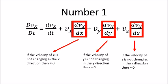Alright, here comes the tricky part. If velocity of x is not changing in the x direction, then dvx dx equals zero. This applies to dvx dy and dvx dz. But what does this mean and how can we identify it?